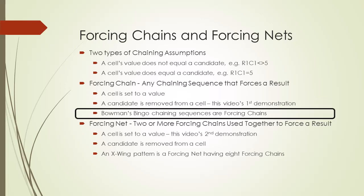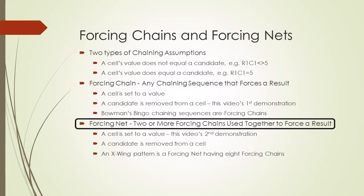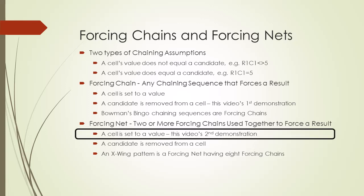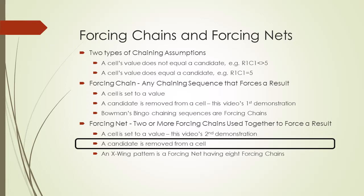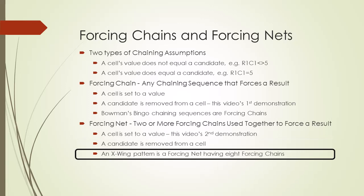Every Bowman's Bingo chaining sequence is a forcing chain. A forcing net is when two or more forcing chains are used to force a result in solving the puzzle. The first result of a forcing net is a cell gets set to a value, demonstrated in this video's second demonstration. An X-wing is a forcing net having eight forcing chains — each X-wing corner cell has one forcing chain for when the candidate is off and a second for when it is on.